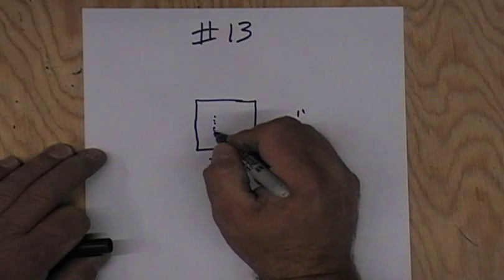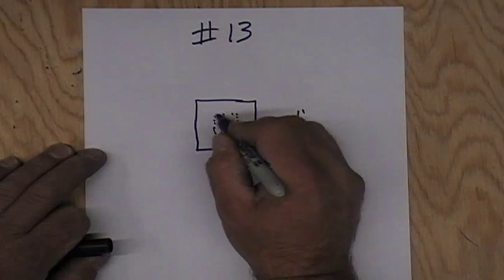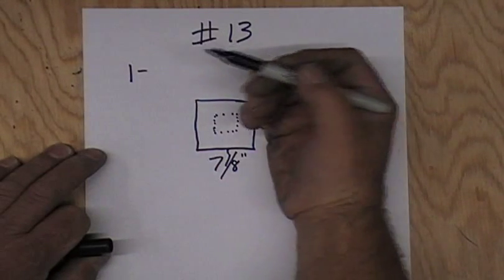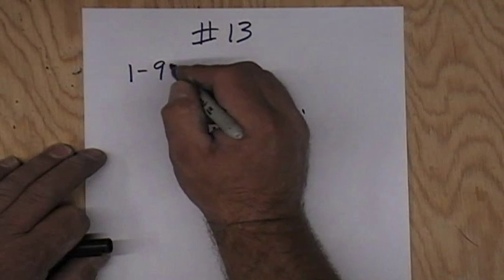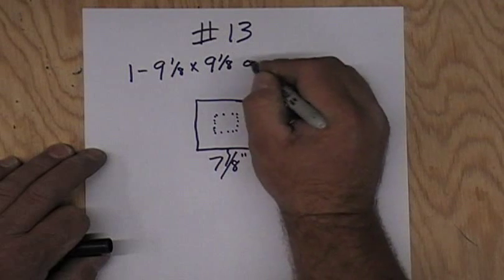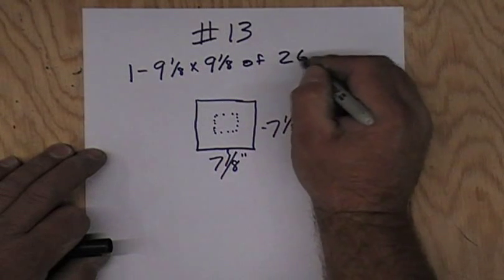What we're going to do is cut an opening in the center of that. So our rough blank out is going to be 9⅛ by 9⅛ of 26 gauge.